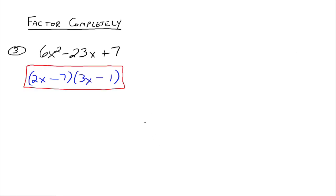We check it: 2x times 3x is 6x squared, 2x times negative 1 is negative 2x, negative 7 times 3x is negative 21x — those add up to negative 23x. And negative 7 times negative 1 gives positive 7. So we have just factored our trinomial. It's called trial and error because that's really what we're doing, and it gets faster with practice.